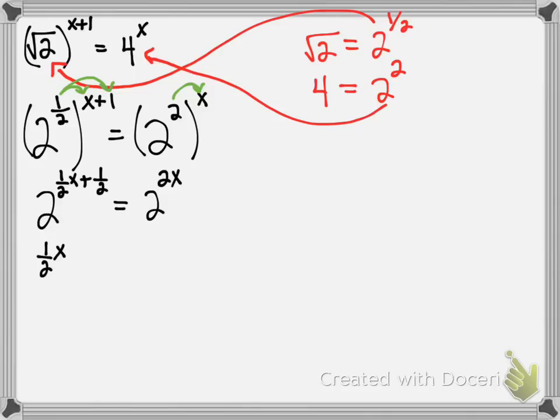So we have one half x plus one half equals 2x. My next step, I'm going to get all the x's on one side, so I'm going to subtract half x from both sides. That'll give me one half equals 2 minus one-half x.